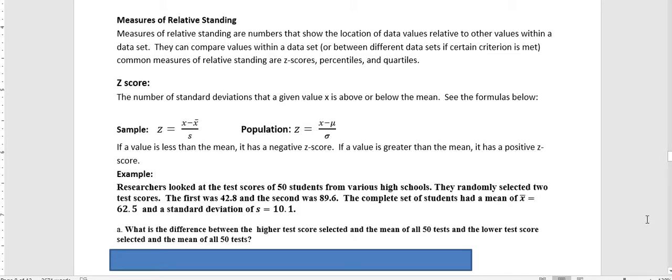Hi, it's Carly McEvoy. I want to talk about measures of relative standing, and those are numbers that show the location of data values relative to other values within a data set that can compare values within a data set or between different data sets if certain criteria is met. Common measures of relative standing are z-scores, percentiles, and quartiles. This video is particularly about z-scores.